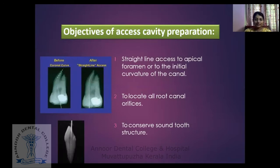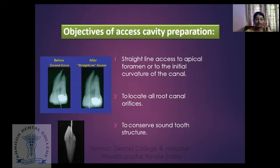Coming to the objectives of access cavity preparation: the first and foremost purpose is a straight-line access to the apical foramen or to the initial curvature of the canal. It is very important to have a straight-line access to the apical foramen or until there is a curvature — this has to be considered when doing an access opening. Then, to locate all root canal orifices, and to conserve sound tooth structure.